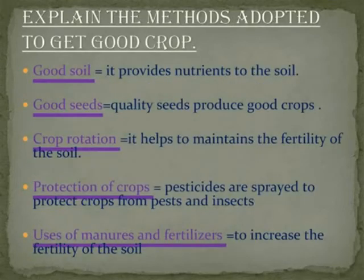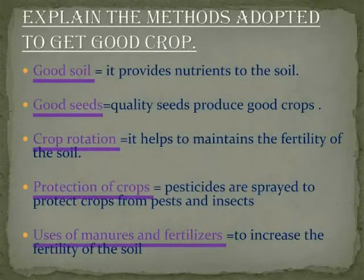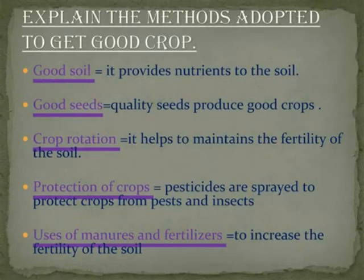Explain the methods to get good soil. Manure: it provides nutrition to the soil. Good seeds: quality seeds give good crops. Crop rotation: it helps to maintain the fertility of the soil. Protection of crops: pesticides are spread to protect crops from pests and insects. Use of manure and fertilizers to increase the fertility of the soil.